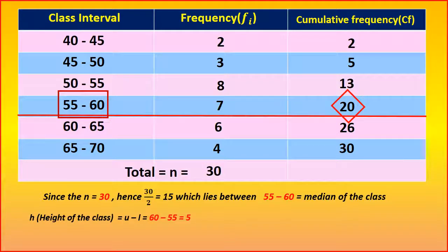The height of the class is U minus L. Upper boundary minus lower boundary is equal to 60 minus 55 is equal to 5.